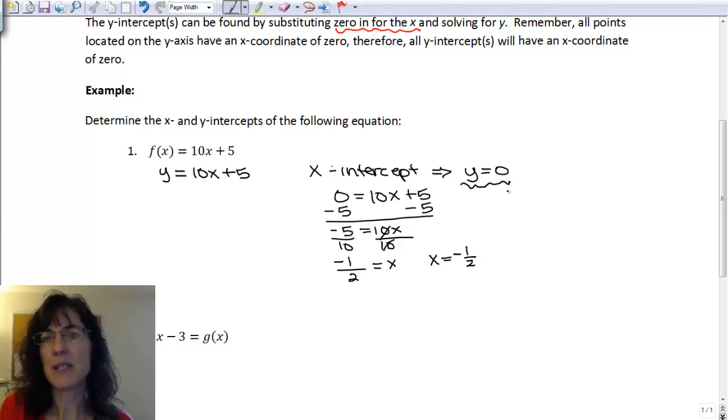My y part, we already said we were going to set it to 0, and we did. And so my ordered pair is going to be negative 1 half comma 0. So that is my x-intercept.